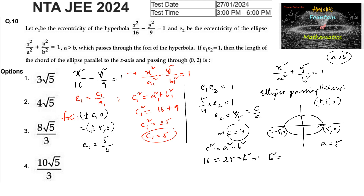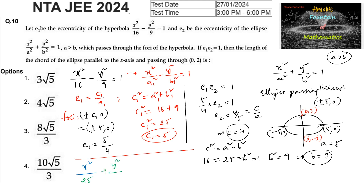Using c² = a² - b², we get 16 = 25 - b², which implies b² = 9, so b = 3. Therefore the ellipse equation is x²/25 + y²/9 = 1.